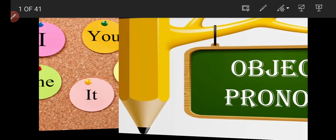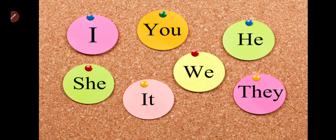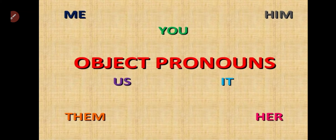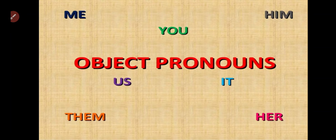First of all, what are these words: I, you, we, he, she, it, and they? Yes, these words are subject pronouns. And here, these are the object pronouns: me, you, us, them, his, her, or it.